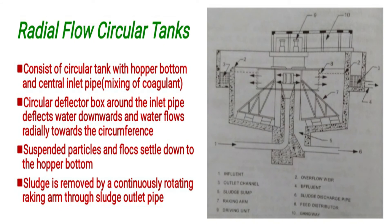It consists of a circular tank with a hopper bottom and a central inlet pipe — this is a radial flow circular tank. A circular deflector box around the inlet pipe deflects water downwards, and water flows radially towards the circumference. Suspended particles and flocs settle down to the hopper bottom.